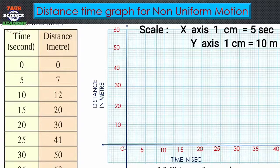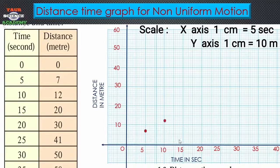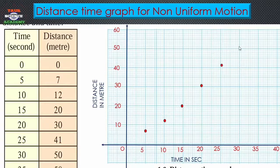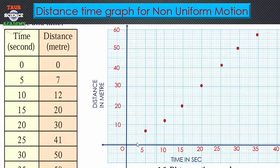Now let's plot the points according to the chart. For zero seconds, it is at the origin. For 5 seconds, 7 meters distance is covered — mark the point 7 lines up. For 10 seconds, 12 meters — 12 lines up. For 15 seconds, 20 meters — go up 20 lines. For 20 seconds, 30 meters. For 25 seconds, 41 meters. For 30 seconds, 50 meters distance covered. For 35 seconds, 58 meters — mark that point above 50. Once you see all these points, you'll notice they cannot all be connected by a straight line.